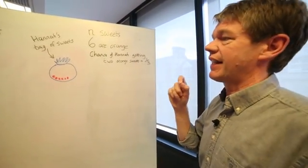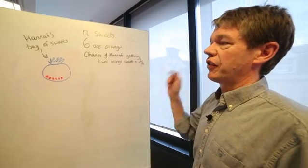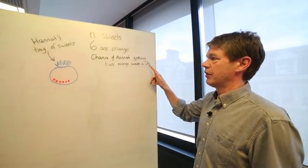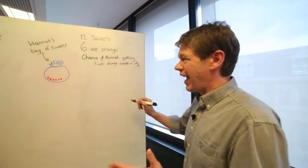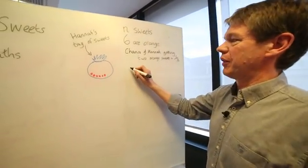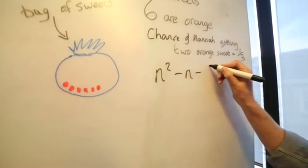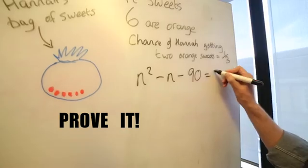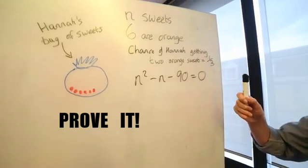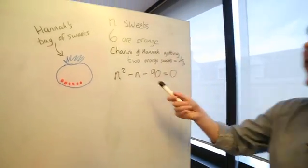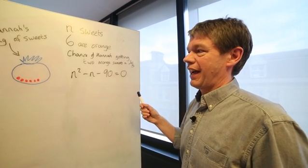And they're both randomly selected out of the bag and we're told that the chance that that would happen was one third. And then suddenly out of the blue you're asked this question: Prove that N squared minus N minus 90 equals zero. And not surprisingly lots of people are saying what on earth has that got to do with Hannah's sweets?